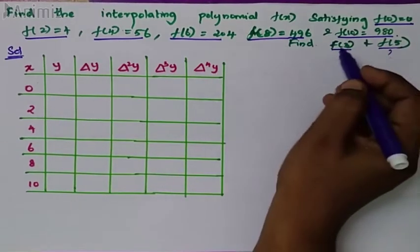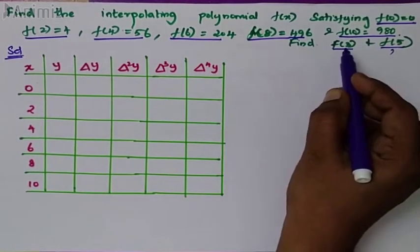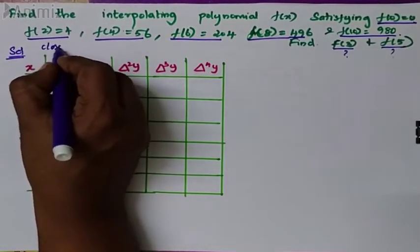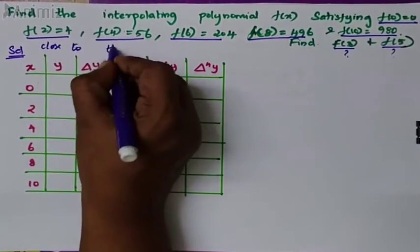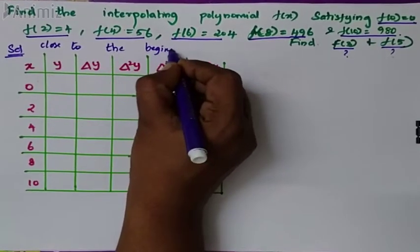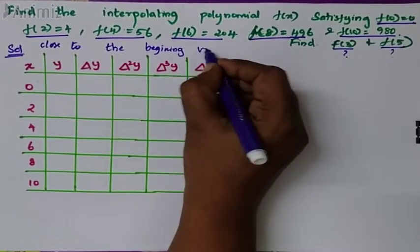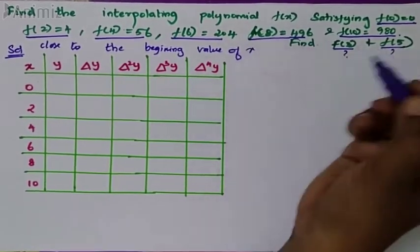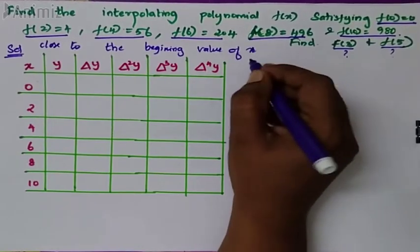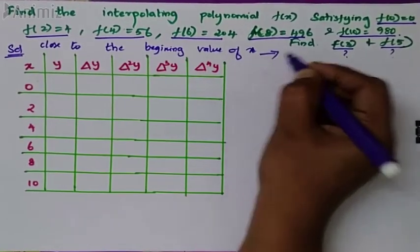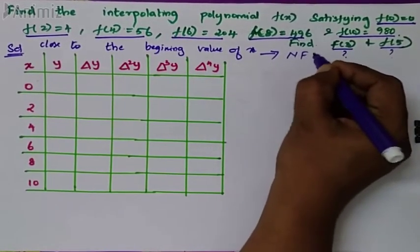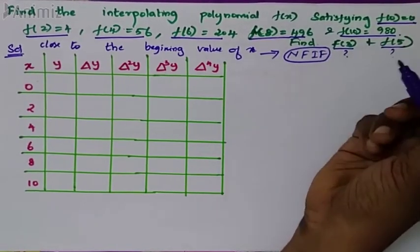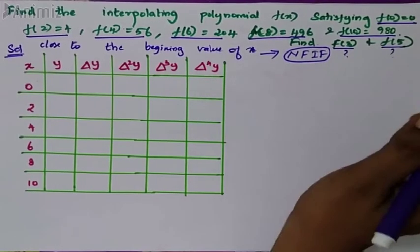Now f of 3 and f of 5 are close to the beginning value of x. So we go for Newton's forward interpolation formula.